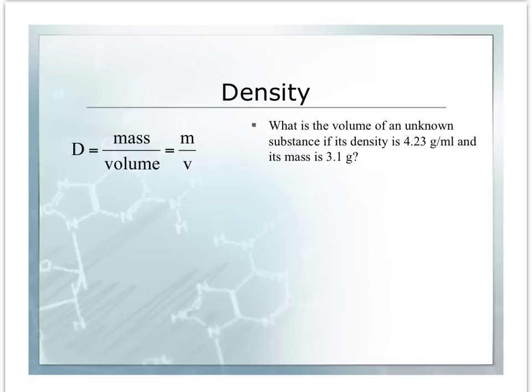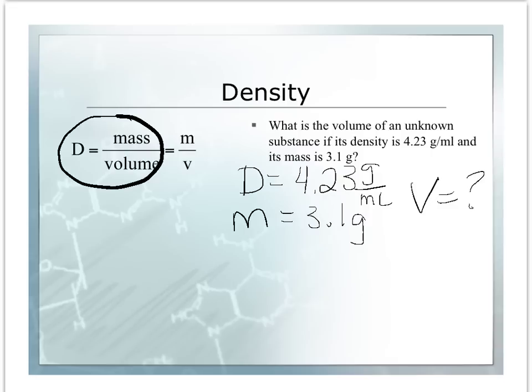Let's do another one. What is the volume of an unknown substance if its density is 4.23 grams per milliliter and its mass is 3.1 grams? Write down what you know: your density is 4.23 grams per milliliter, your mass equals 3.1 grams, and we're looking for volume. If you notice our density equation, we do not have an equation that solves for volume. But can we get one? Of course we can.